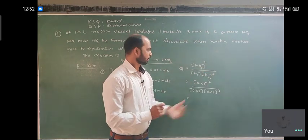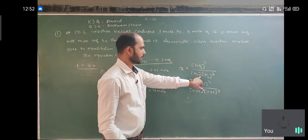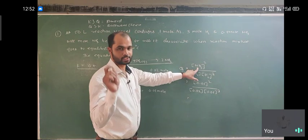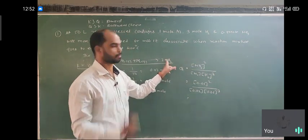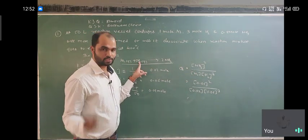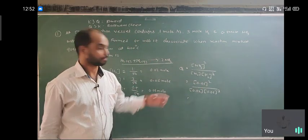So here NH3 is the product, their power is 2 because the power is equal to the number of molecules. We consider N2, there is 1 molecule. H2 is given 3 molecules, so power is 3. We already calculated this and the answer is 23.15.